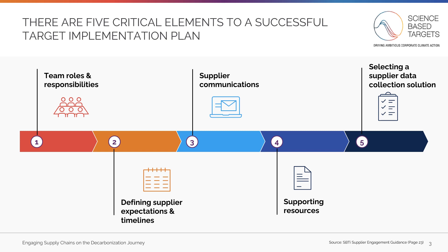A target implementation plan is defined by five elements. First, defining team roles and responsibilities. Second, defining supplier expectations and timelines. Third, determining how to handle supplier communication. Fourth, developing supporting resources for suppliers. And fifth, selecting a supplier data collection program. Each of these elements will be discussed in detail in this module.